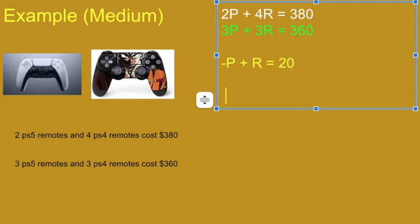And again, add that P to both sides. We know that the one remote is 20 dollars more than the other remote. Then you could, again, use this, go into this equation, and replace.